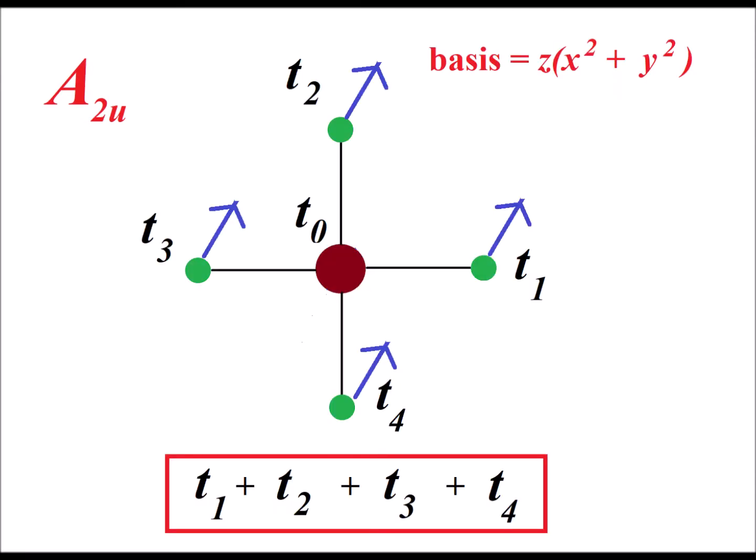This gives us the linear combination of vectors that gives us this A2U torsion, t1 plus t2 plus t3 plus t4.